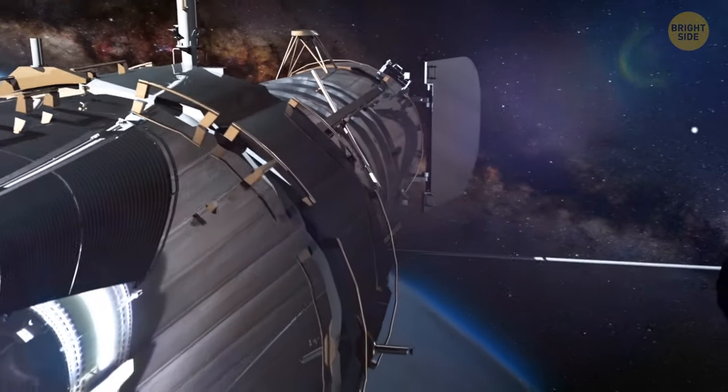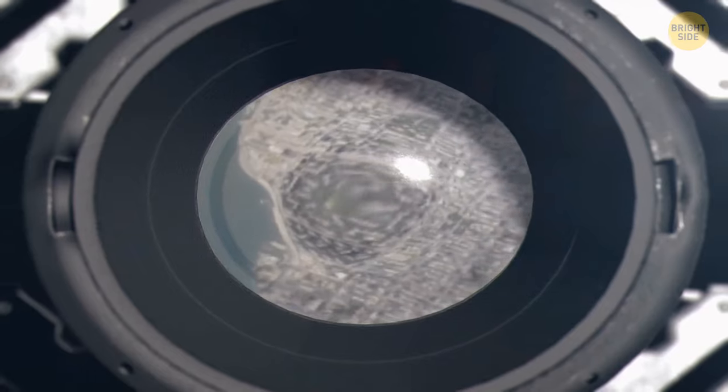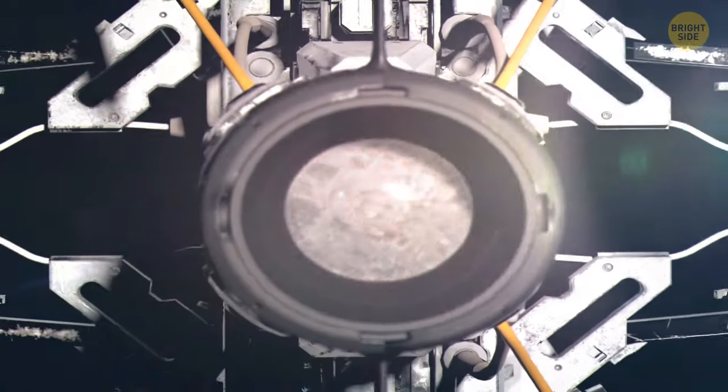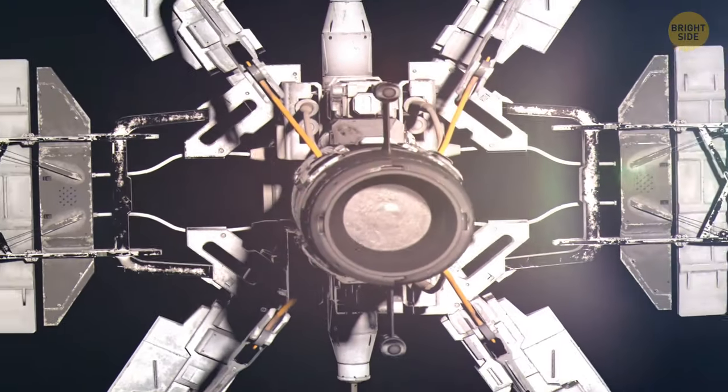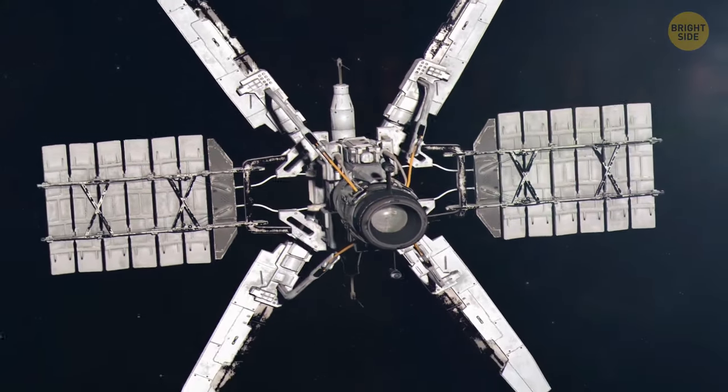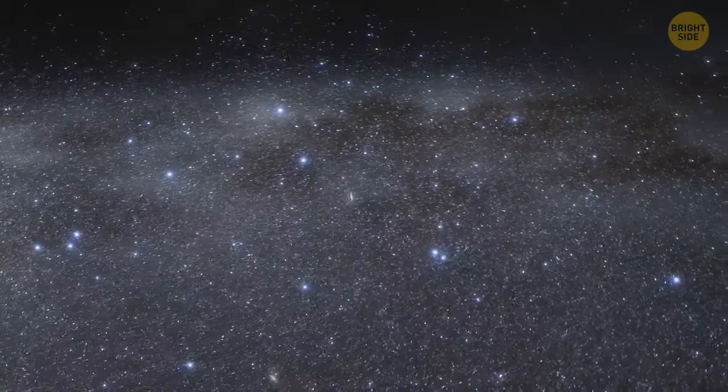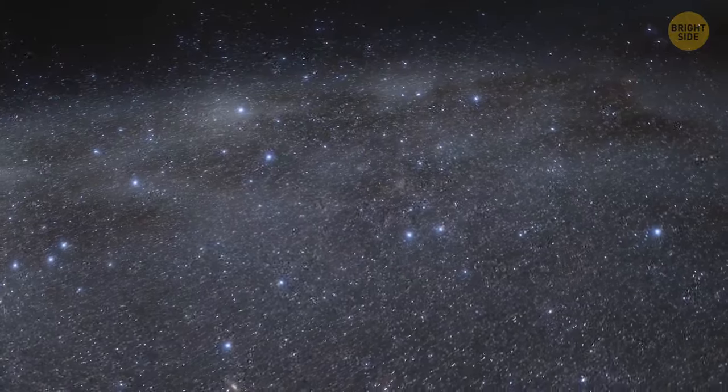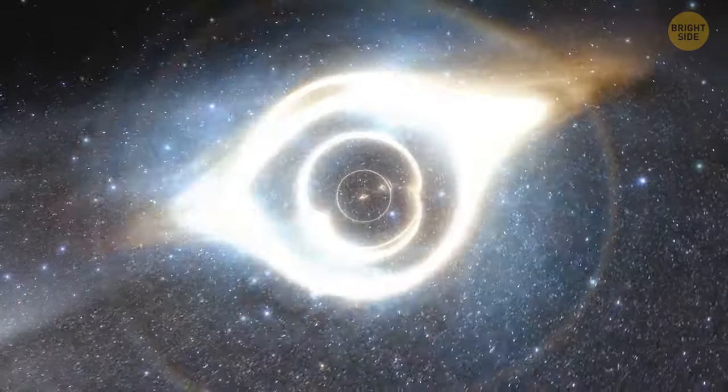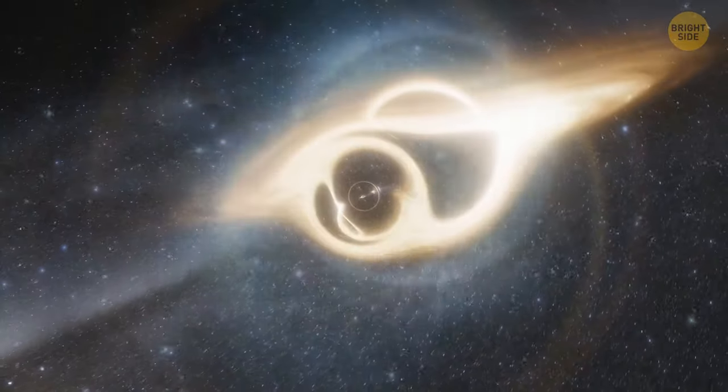But scientists haven't given up yet. After all, they have a lot of other technologies to find black holes, small and big, in the vastness of space. Some of these methods involve watching the stars orbiting black holes. Sometimes it's a fake gravitational wave signal, which is produced when two black holes collide.